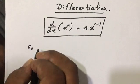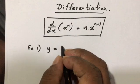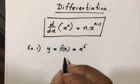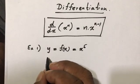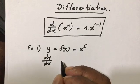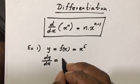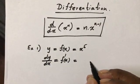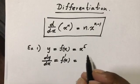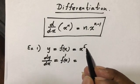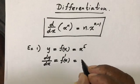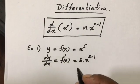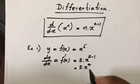Let's look at example number one. y equals f(x) equals x to the fifth. We want to find the derivative. The derivative of y equals dy/dx equals f'(x). We bring down 5 to the front as a coefficient and reduce that power by 1, giving us 5 times x to the fourth. This is the answer.